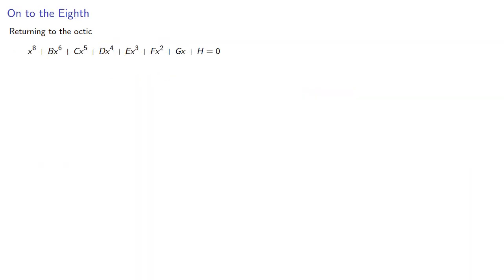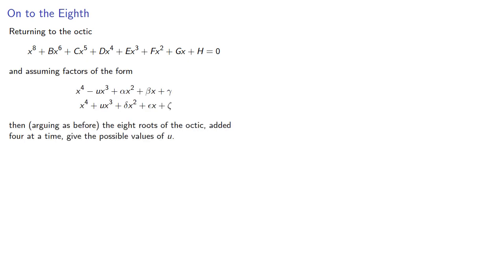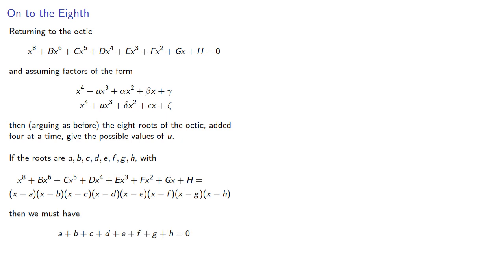Now let's consider the octic and assume that it has factors of the form. Then, arguing as before, the eight roots of the octic added four at a time gives the possible values of u. And again, as before, if the roots are given, then the factorization is shown, and so we must have the sum equal to zero.